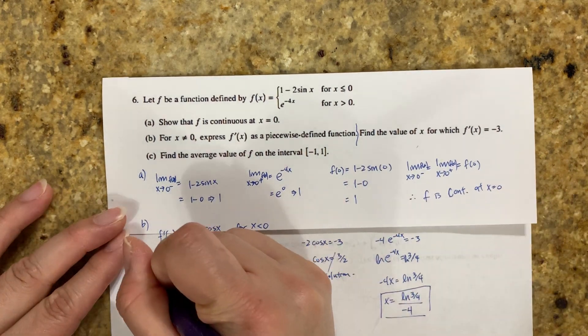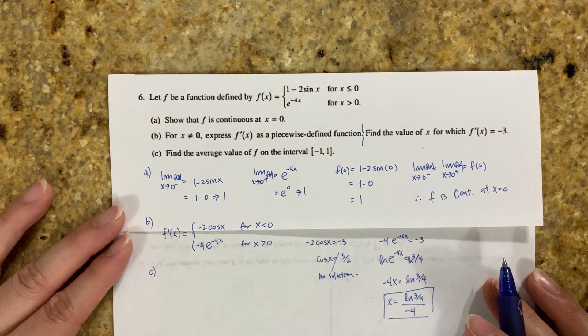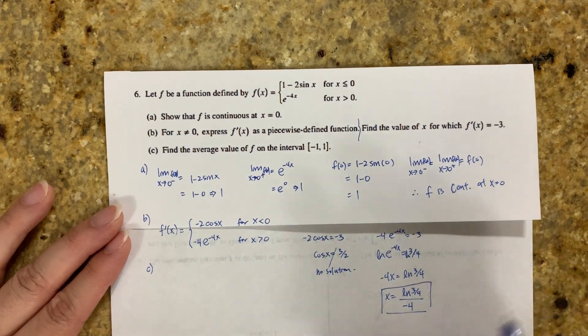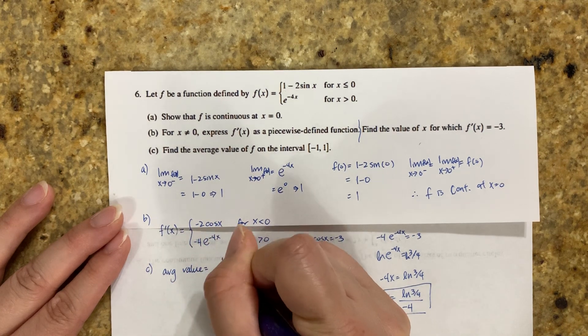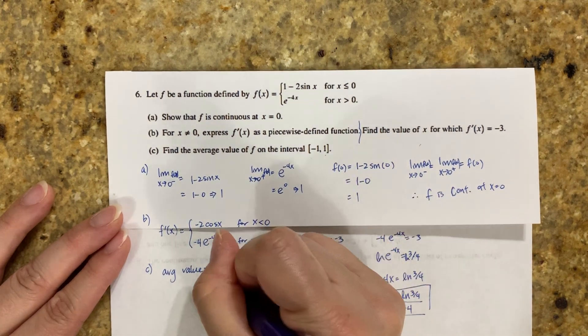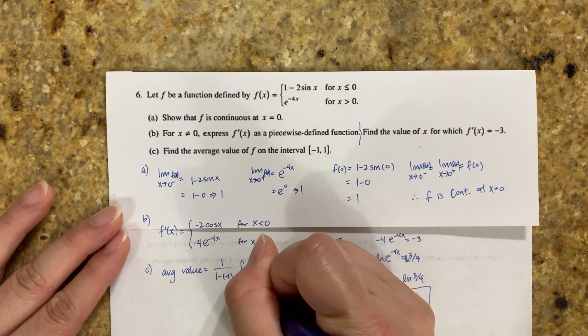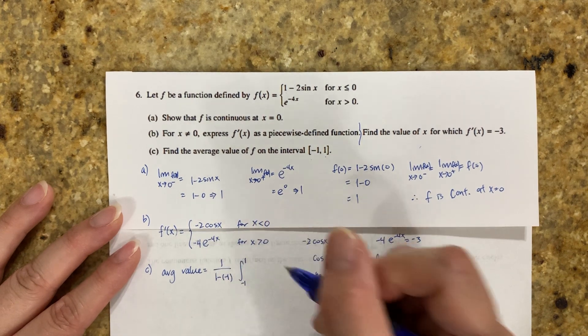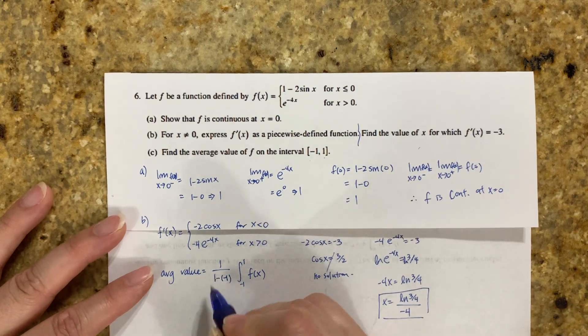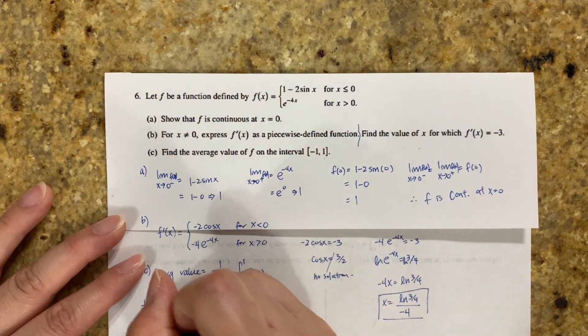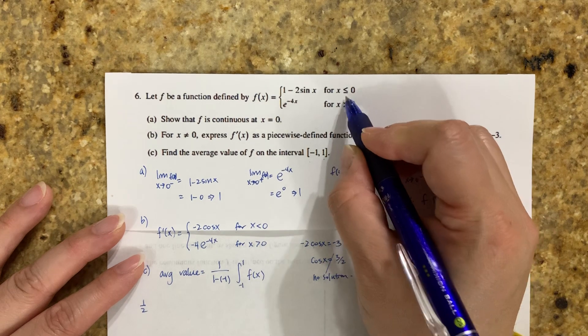Part C says find the average value of f on the interval [-1, 1]. Average value equals 1/(b-a), which is 1/(1-(-1)), times the integral from -1 to 1 of f(x). The first piece is 1/2, but between -1 and 1 you cross through 0.